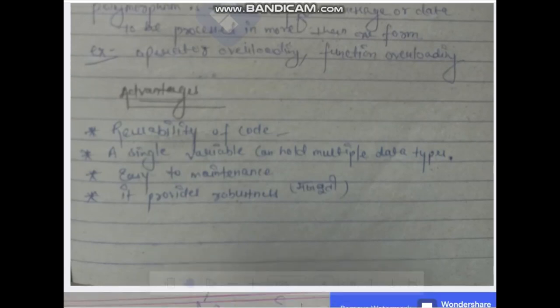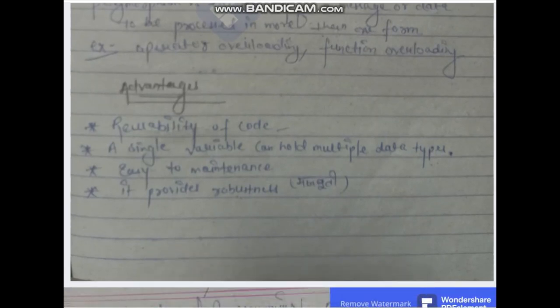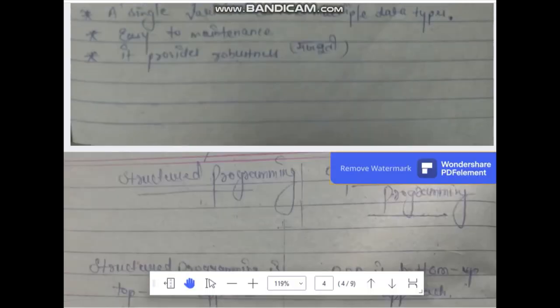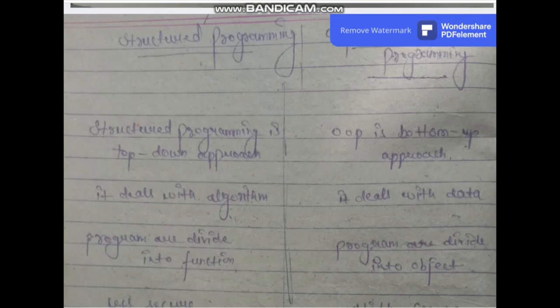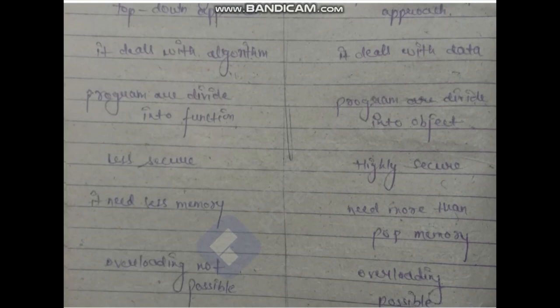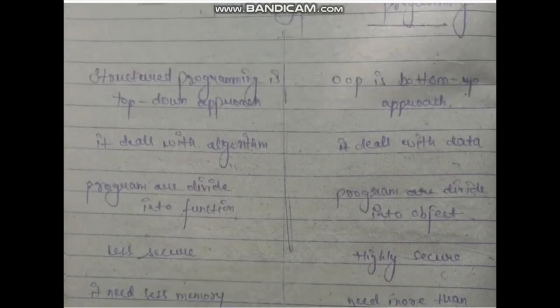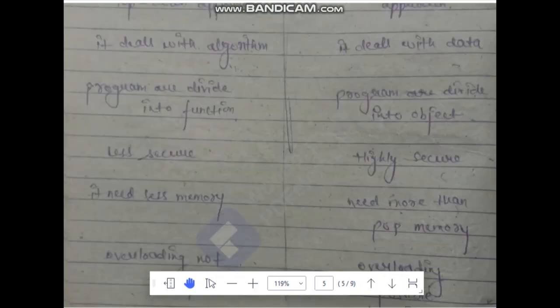The advantages include: variability of code, single variables can hold multiple data types, easy to enhance. OOPs and structured programming can be two different things — don't mess this topic up, take it seriously. All notes are very easily explained. If you have not completed your notes, then it will affect your exam portion.